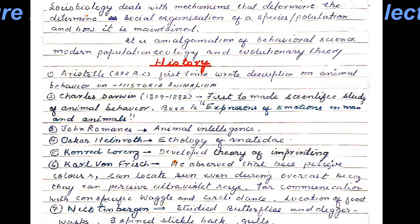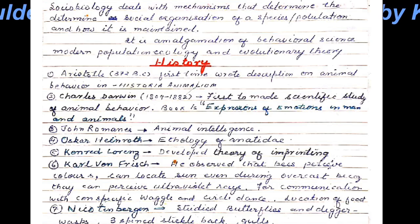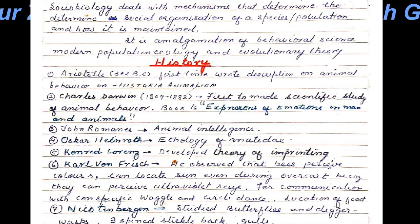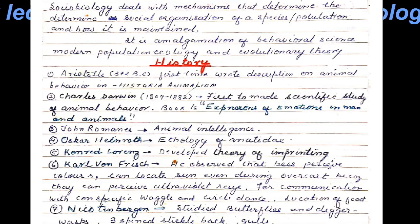Then for the first time, a scientific study of animal behavior was made by Charles Darwin, who mentioned animal behavior in his book Expression of Emotions in Man and Animals.